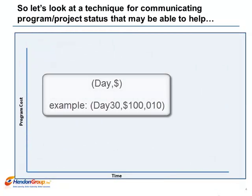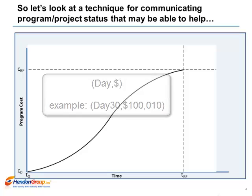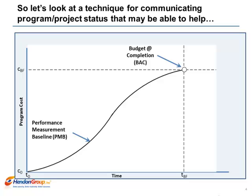Key initiative or program status can be described in two dimensions: time expressed in duration, and cost expressed in currency or hours. If you apply the cumulative program cost for all planned work over the planned duration, you get an S-curve. This S-curve is known as a performance measurement baseline, and the point at the top of the curve is the budget at completion — for example, $1.4 million over 14 months.